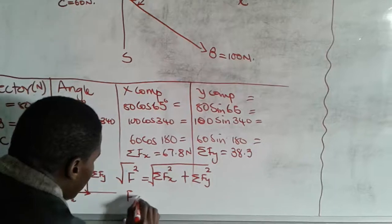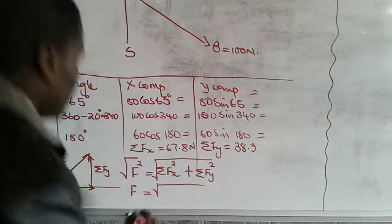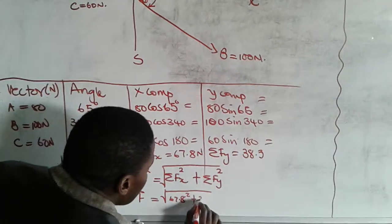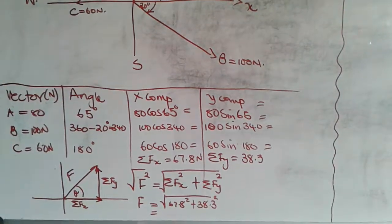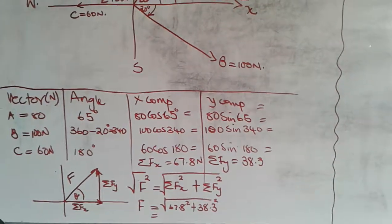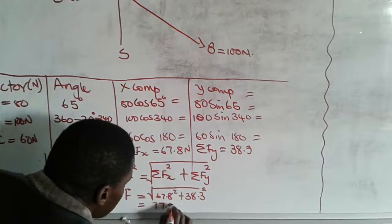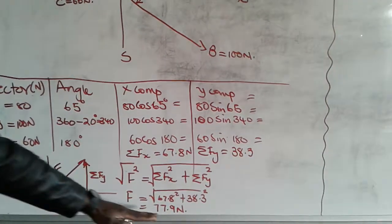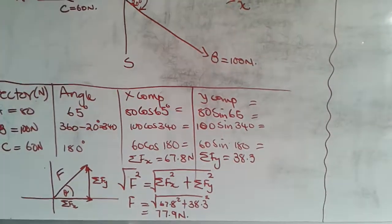Substituting our values: F = √(67.8² + 38.3²). From the calculator, this gives us 77.9 newtons. So the magnitude of the resultant of all three forces is 77.9 newtons.